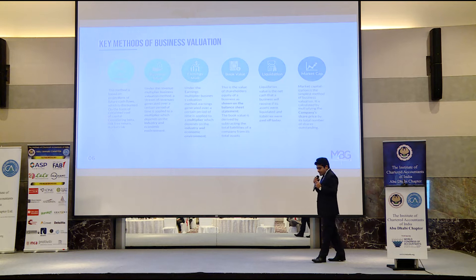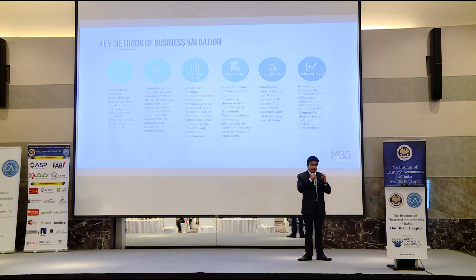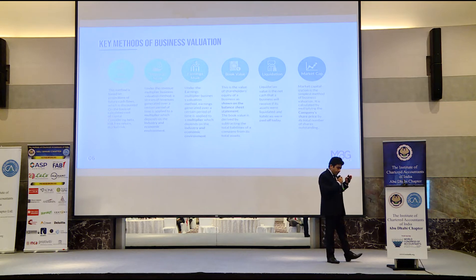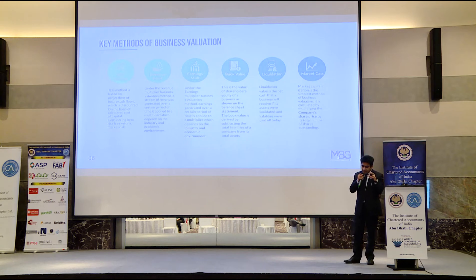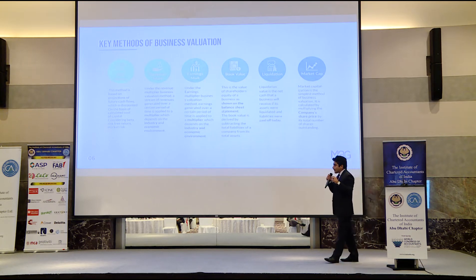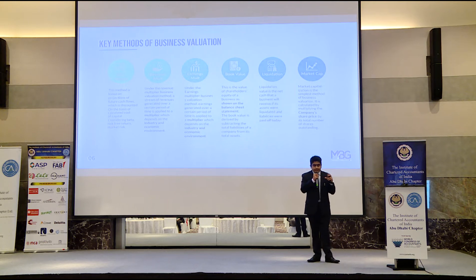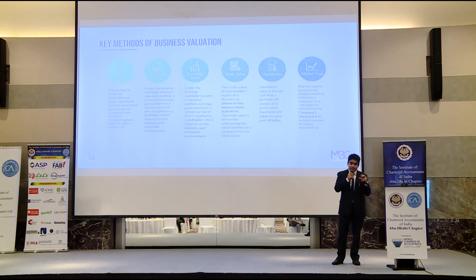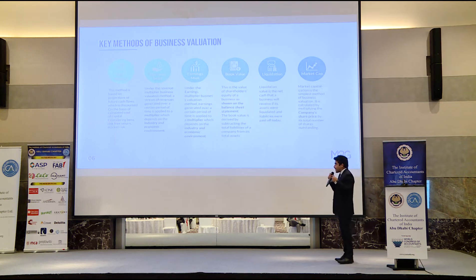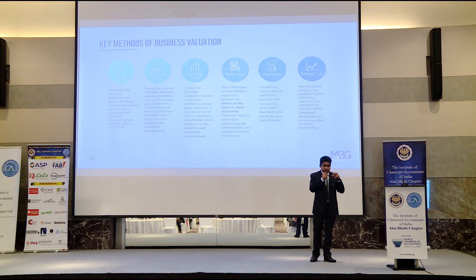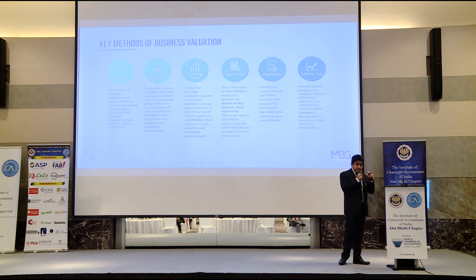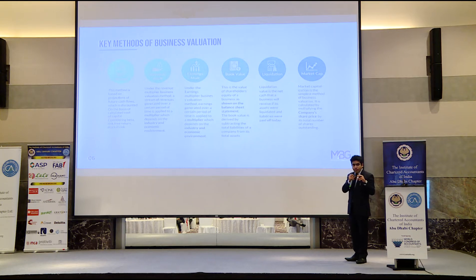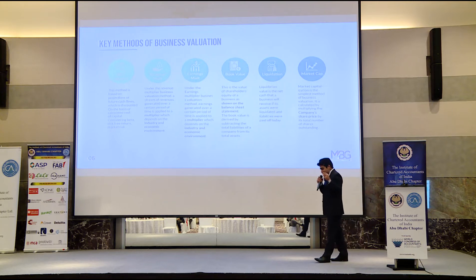The second method is revenue or earnings multiplier. In revenue multiplier, you take the average revenue from past five years and multiply it with the revenue ratio of a similar organization operating in the market. The problem is whether the multiplier achieved by comparable companies is achievable for your organization. Revenue is a top-line figure and whether earnings match industry standards is a key question. Similarly, the earnings multiplier takes the EBITDA multiple of similar organizations and multiplies it with your average earnings for the past five years.